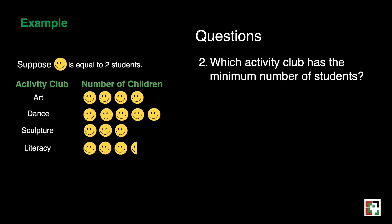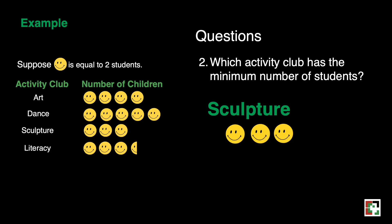For question two, which activity club has the minimum number of students? Based on our table, sculpture has only three smileys. Three times two equals six students. So our answer for this question is sculpture.